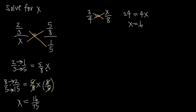So 16 over 75 is the value of x that makes this proportion true. You can solve it that way, but there is also an alternative method. With this alternative method, we recognize that 2 thirds over x is the same as 2 thirds over x over 1, since x equals x over 1. Now we have a fraction over a fraction on each side.